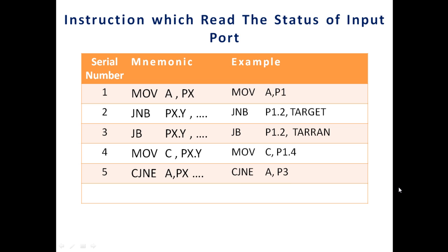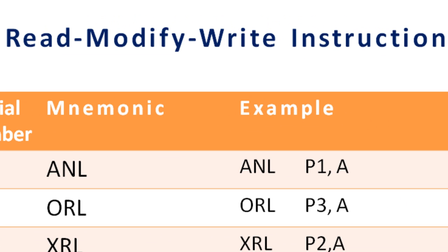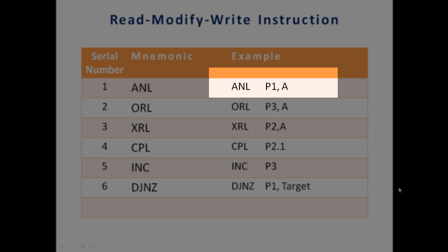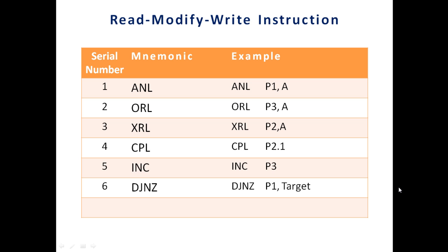The second group of instruction has a typical job of read, modify, and write. In the previous case, we only read the values into the processor, while here we read, modify, and write the value. Majority of the instructions are logical instructions, arithmetic instructions, and increment and decrement type. When you write ANL P1, A, that means AND the value of port 1 with A and put the result in port 1.